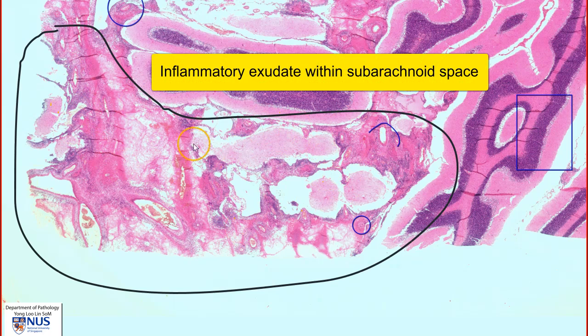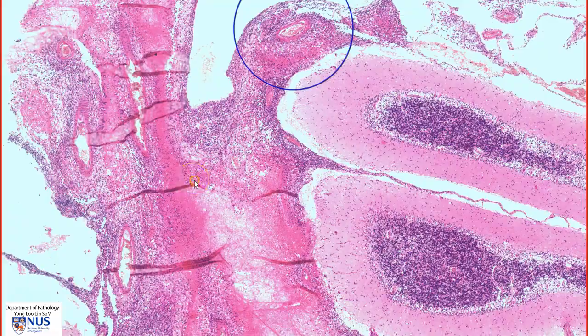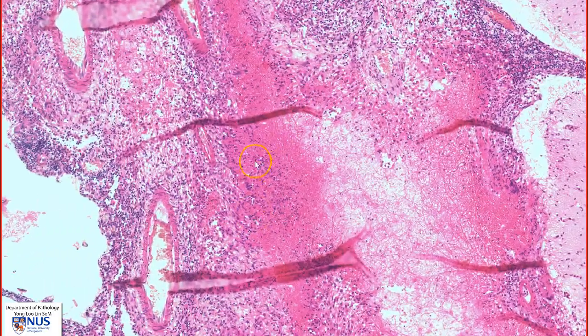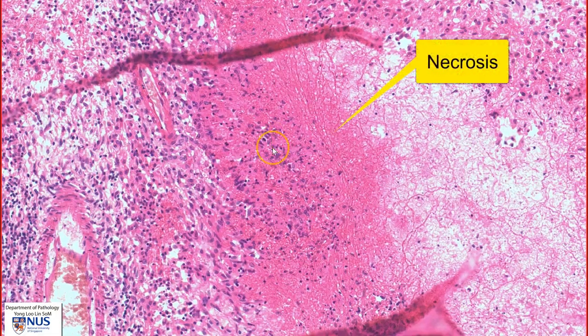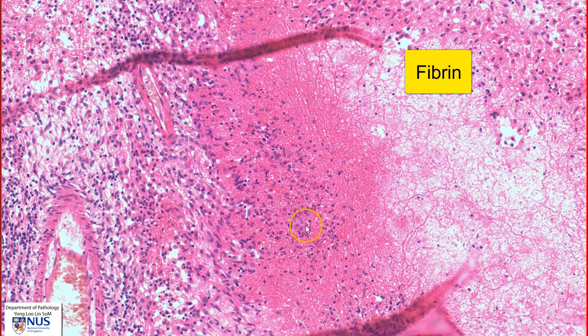This is the expanded subarachnoid space. If we look in this region, we can see that there is a lot of amorphous eosinophilic areas, which are areas of necrosis. We can also see this eosinophilic fibrillary material, which is fibrin. Hence, the exudate is usually whitish or grayish in color.